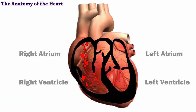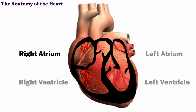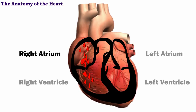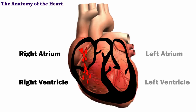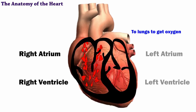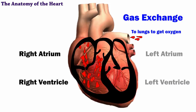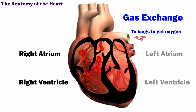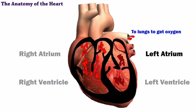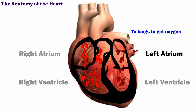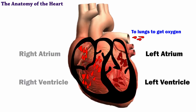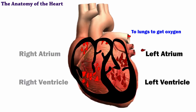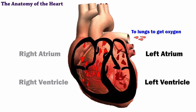Blood returning from your body's organs and tissues enters the right atrium. Because this blood has provided oxygen to your body, it's very oxygen poor. It moves to the right ventricle and out to the lungs to pick up more oxygen in a process called gas exchange. The now oxygen-rich blood travels into the left atrium and into the left ventricle before your heart pumps it to the rest of the body.